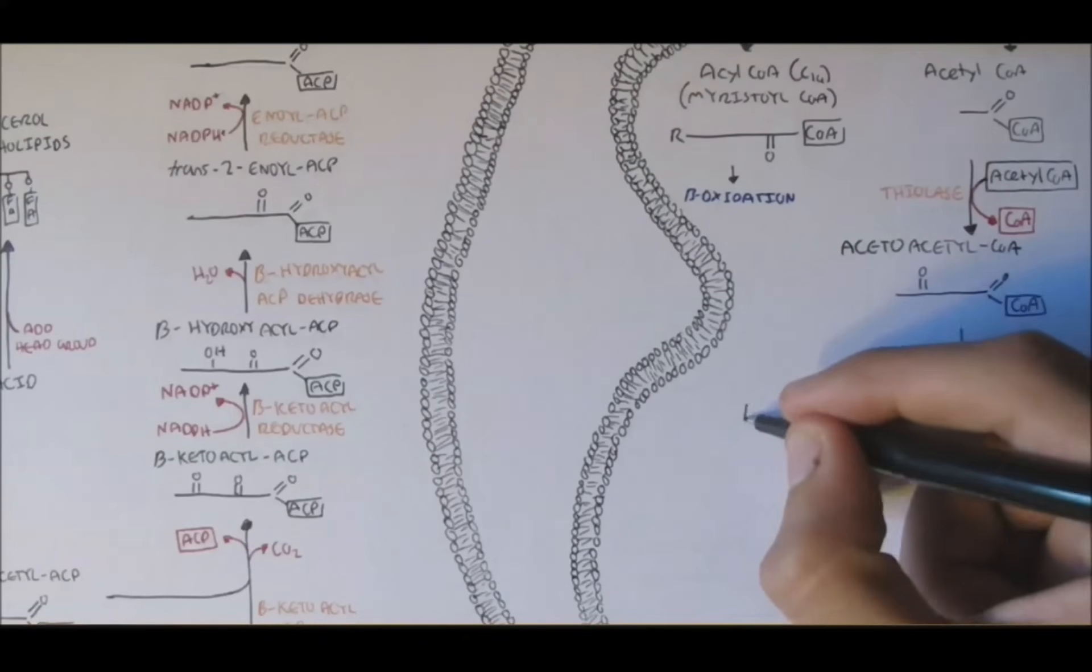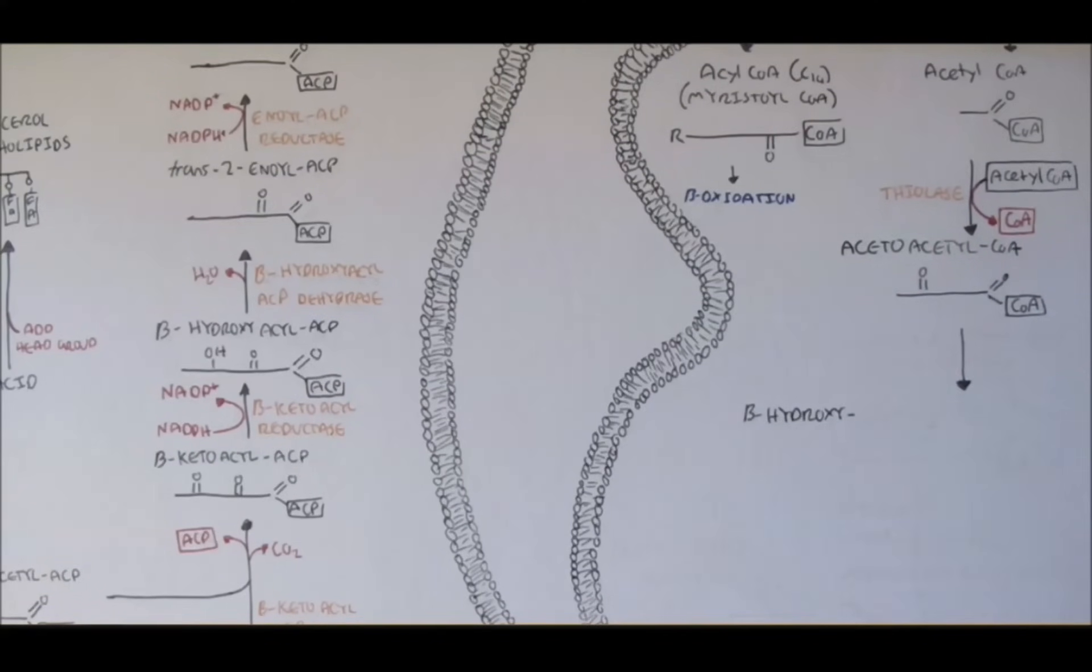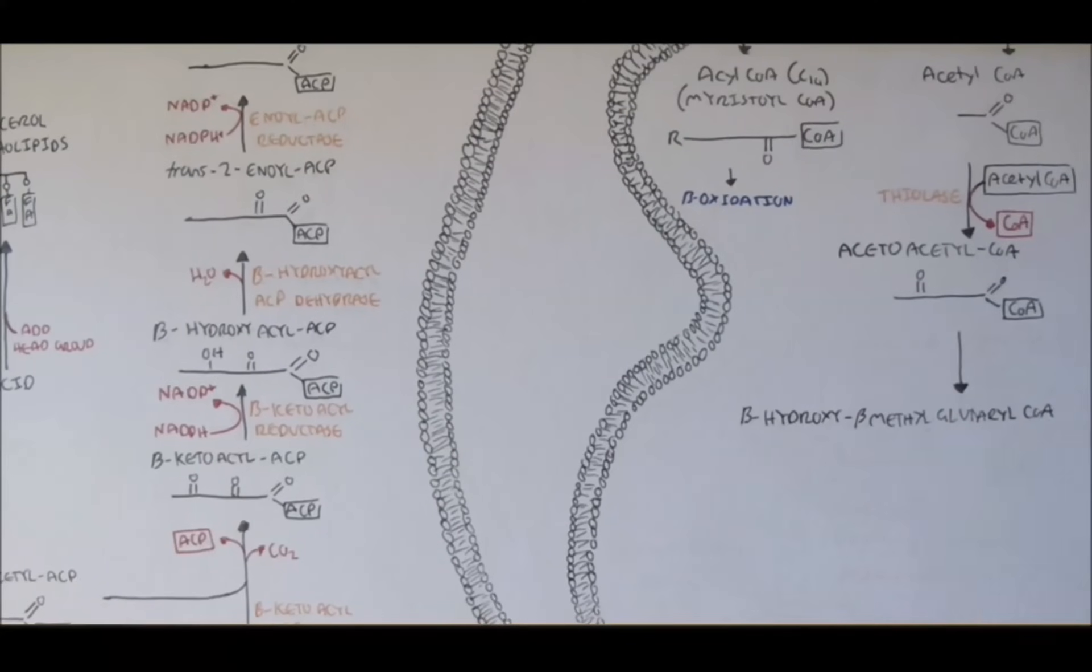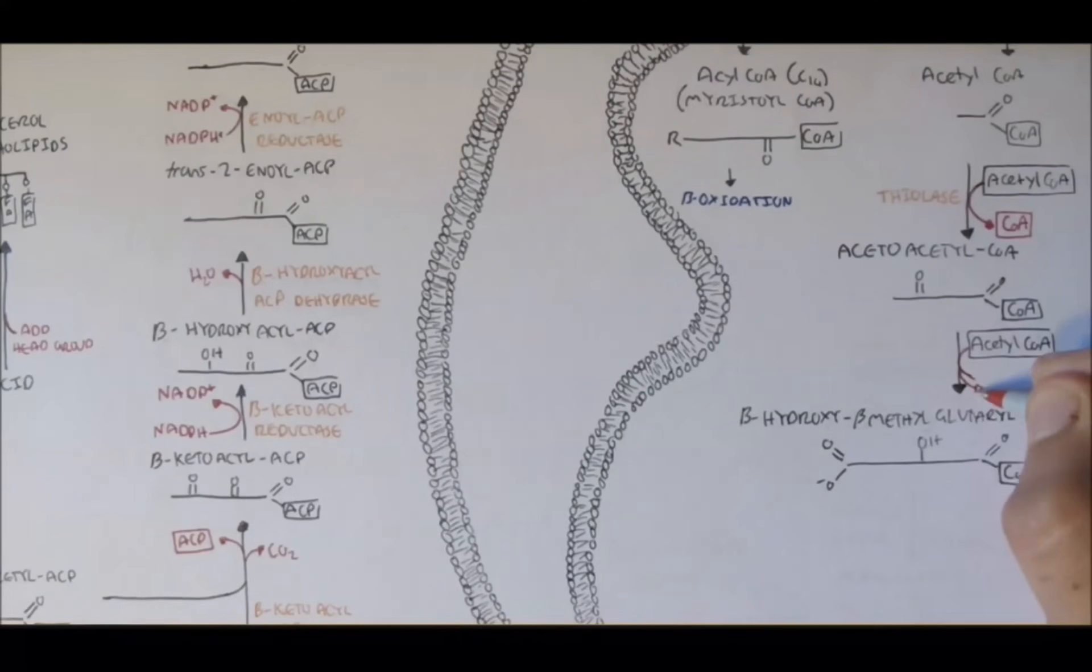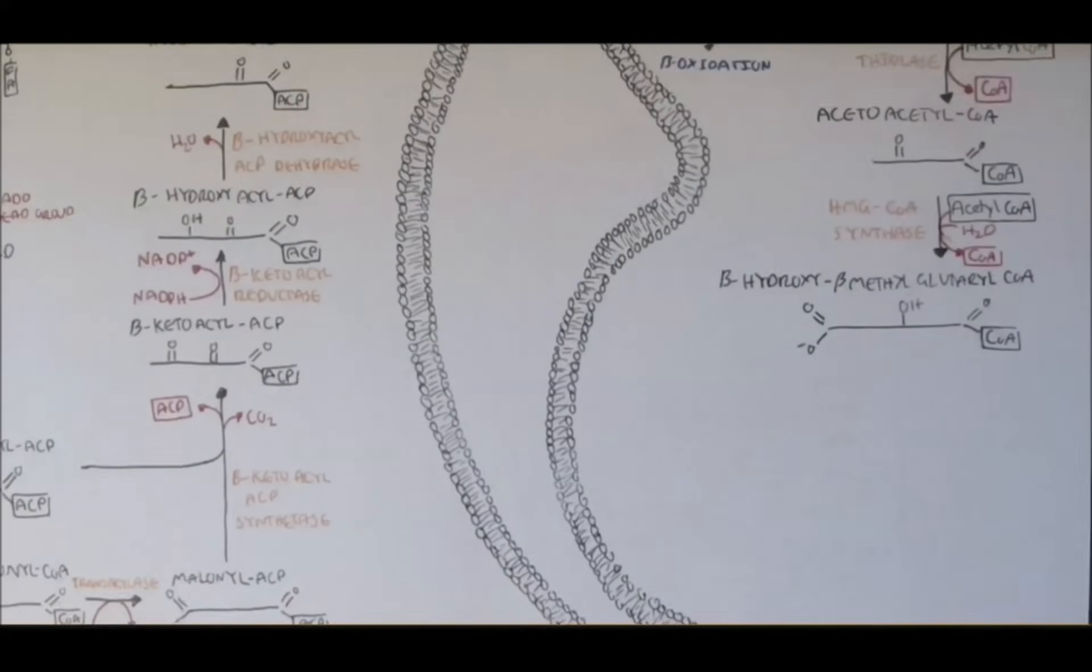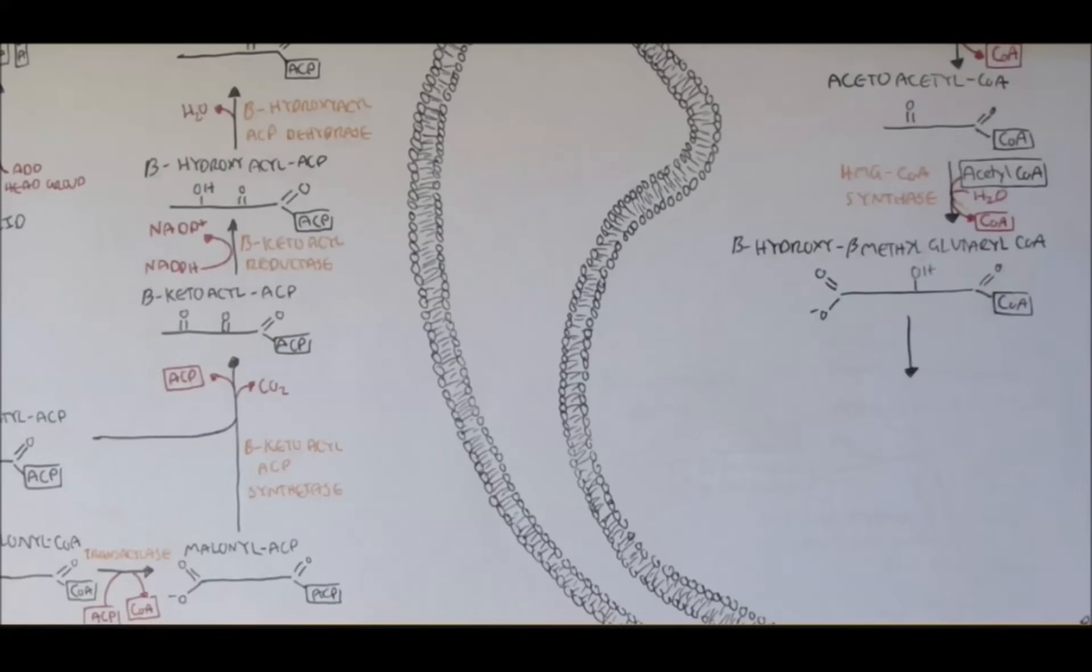Now acetoacyl-CoA, with the addition of another acetyl-CoA and also water, can form beta-hydroxy-beta-methyl-gluteral-CoA. Acetyl-CoA is added, CoA is removed, and water is added. This is done by the enzyme HMG-CoA synthase, which stands for hydroxy-methyl-gluteral-CoA.